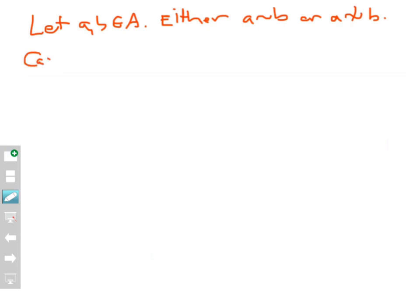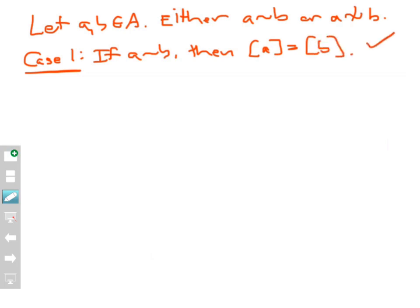In case one, if a is related to b, then we just proved in that lengthy proposition that a is equivalent to b if and only if their classes are equal. So we're done in this case — if a is related to b under an equivalence relation, their equivalence classes must be equal, and the proposition holds.